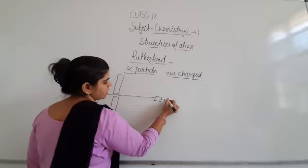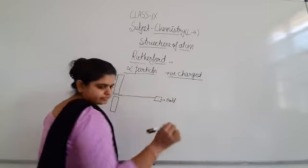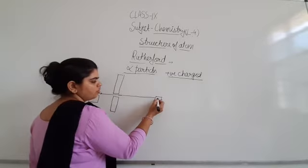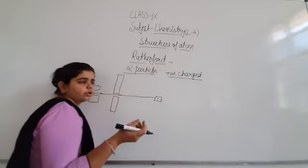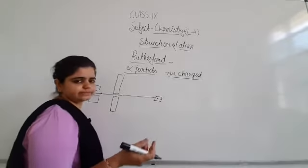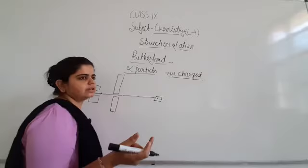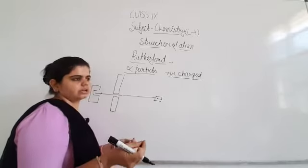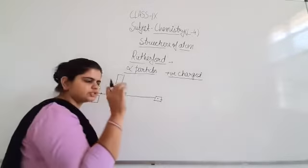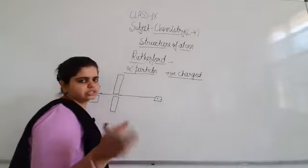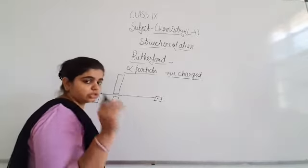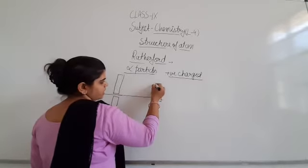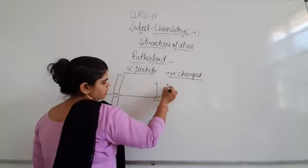Gold foil. Why gold foil? Because gold is very malleable. Malleable and ductile. Malleable means it can be beaten into very thin sheets. Alpha particles strike and alpha particles scatter in different directions. What is scatter?